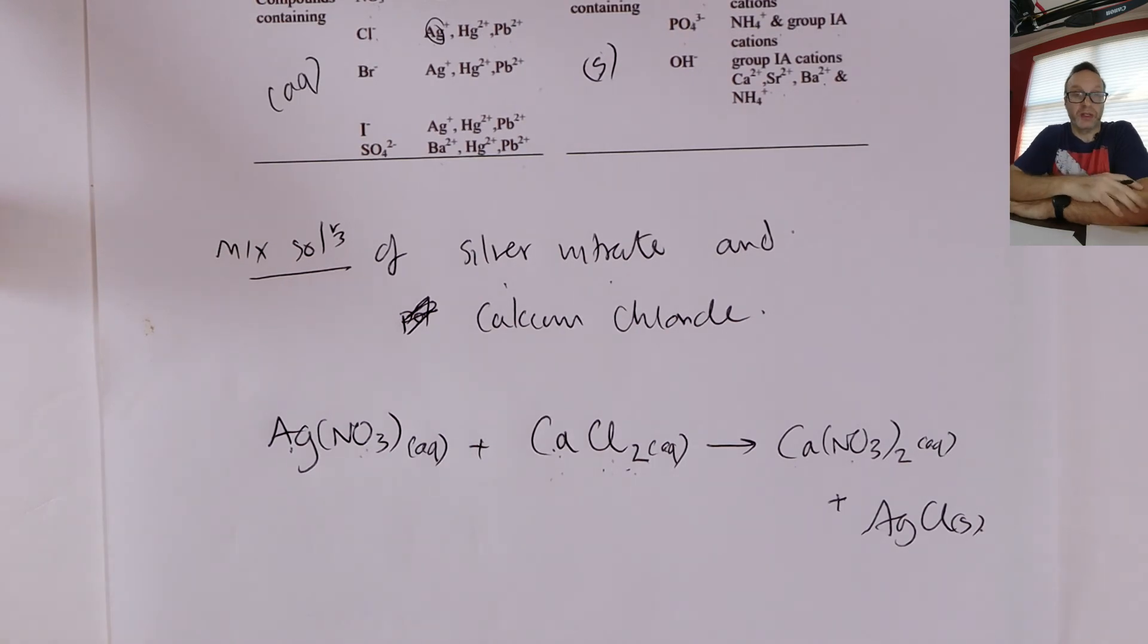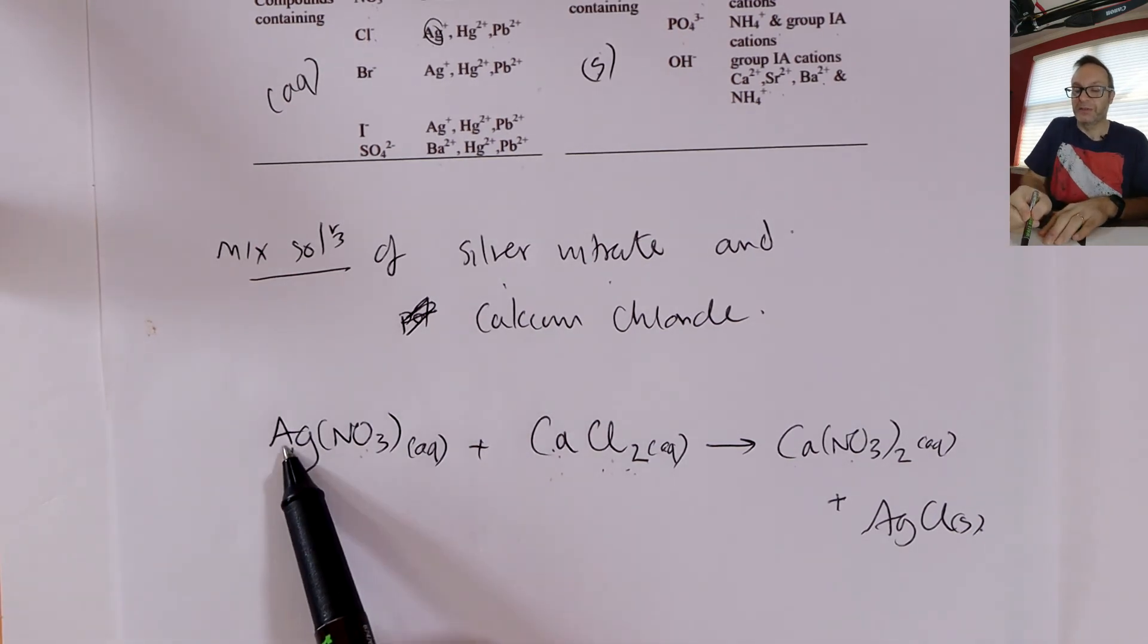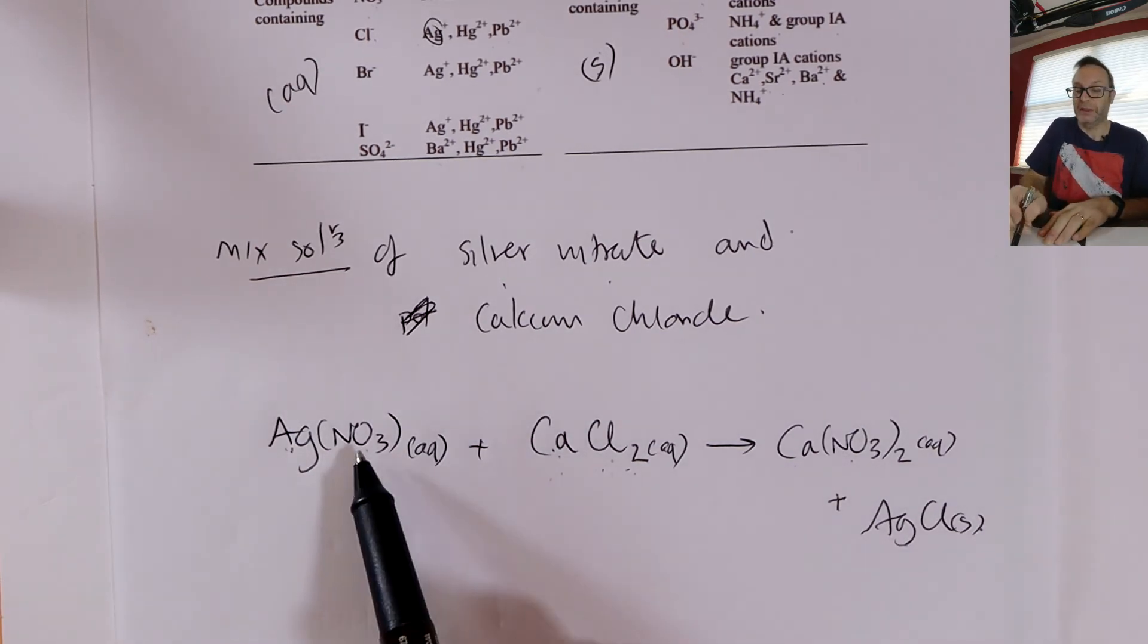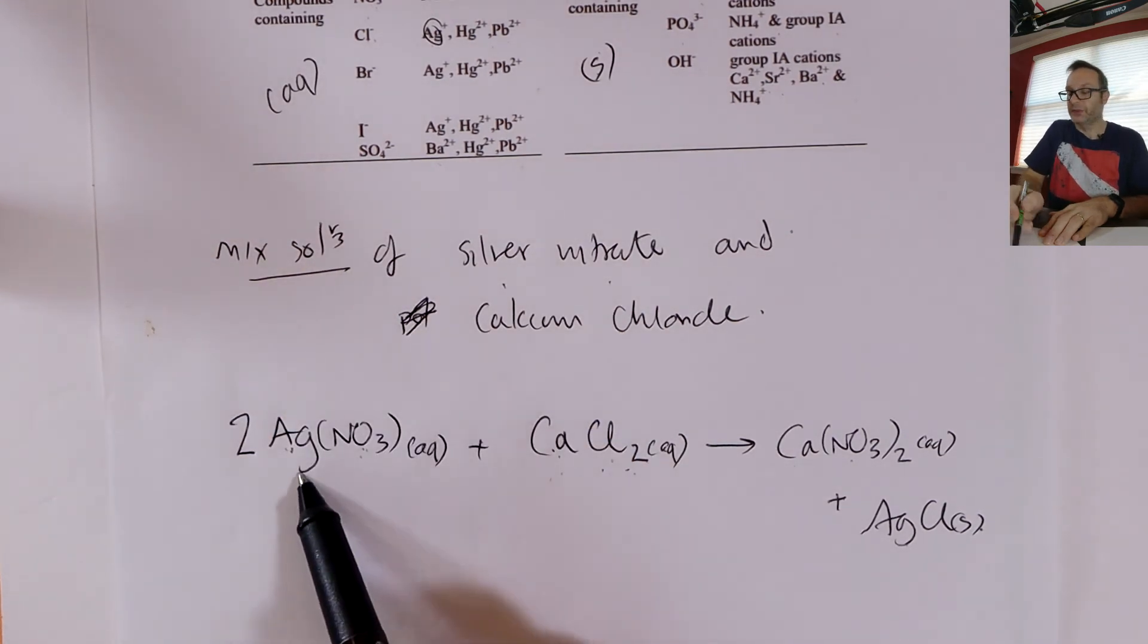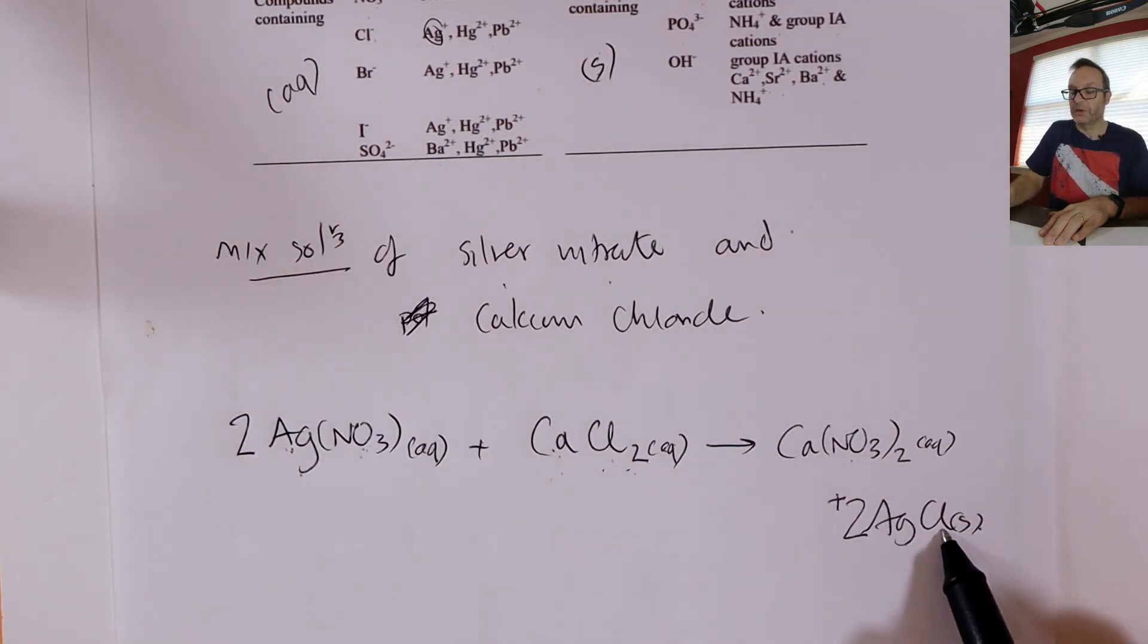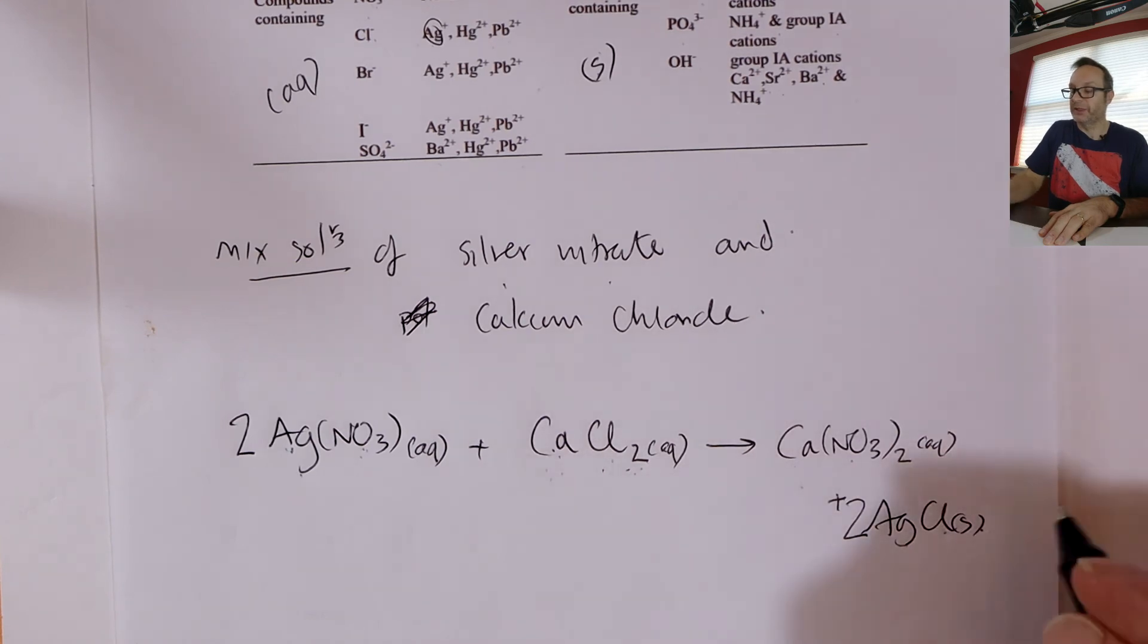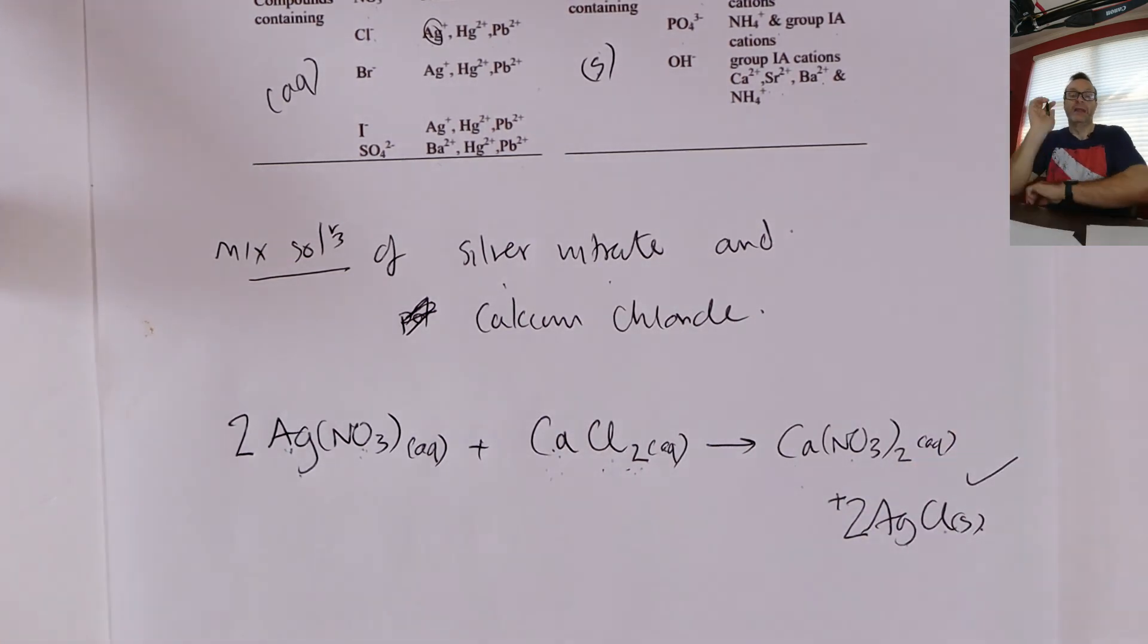You would balance it in a normal way if you wish by counting number of atoms each side. But hey, because it's ionic, fully ionic, just count the number of ions. How many silvers? One. One. How many nitrates? Two. Oh, two. So I've got to put a two in front. Two silvers. Two silvers. Two chlorides. Two chlorides. One calcium, one calcium. So that's a balanced ionic equation.